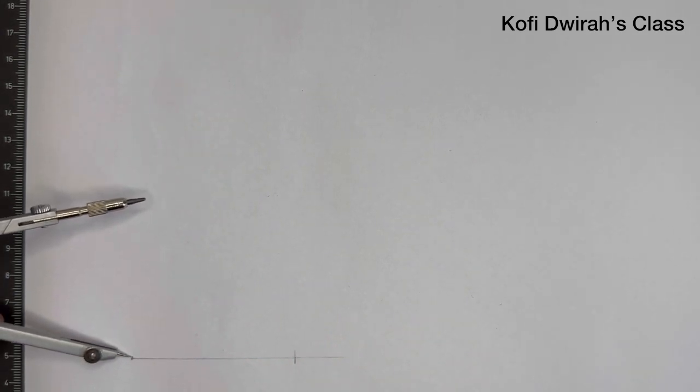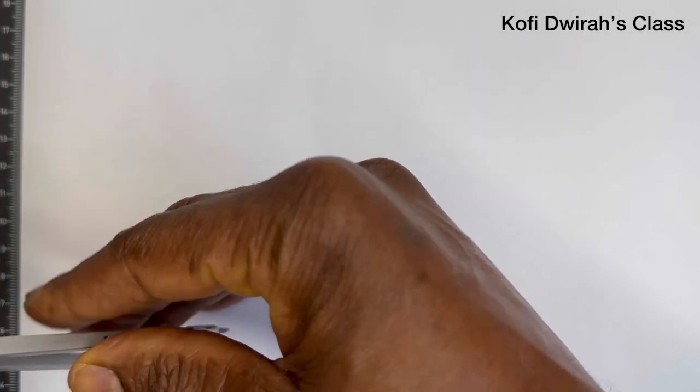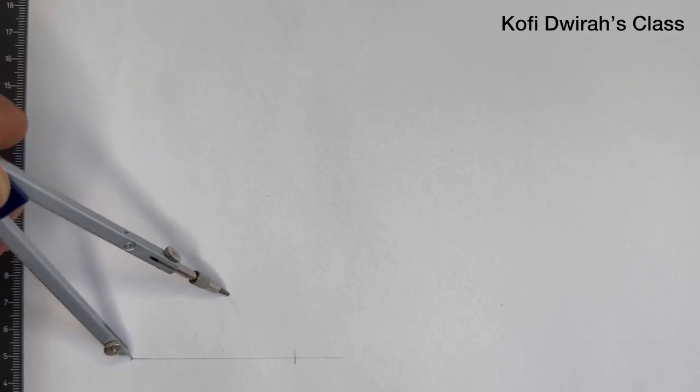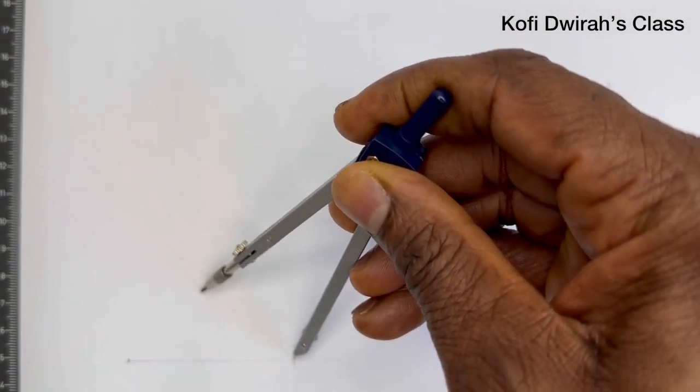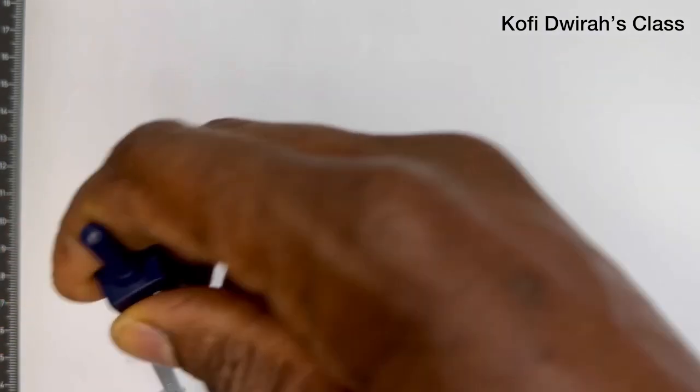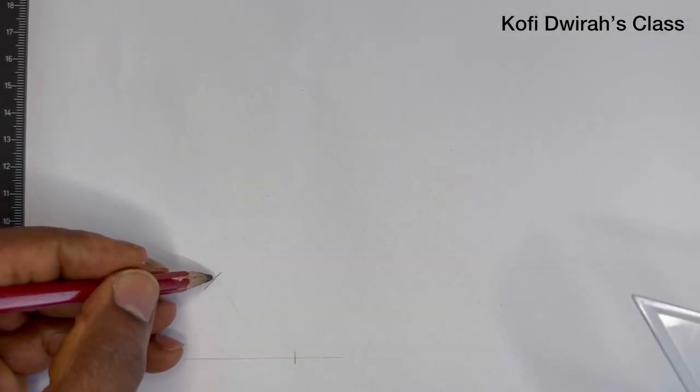At this point, open your compass to more than half and draw an arc. Draw another arc, then at the next point draw another arc. From these two intersection points, you draw a line.